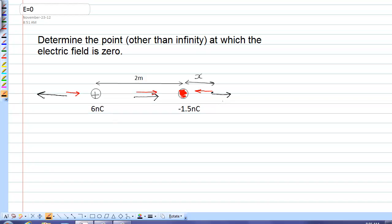To the right, due to the positive charge, the magnitude of the electric field would be k times the charge, 6 nanocoulombs, over the distance from that charge, which would be x plus 2 squared. Because the electric field due to a point charge E is equal to kq over r squared.